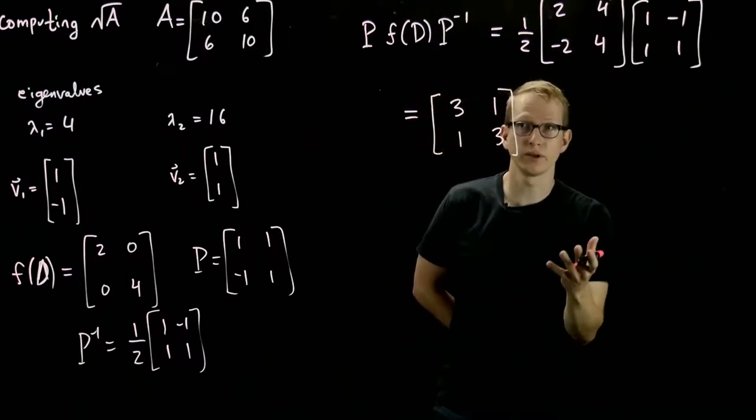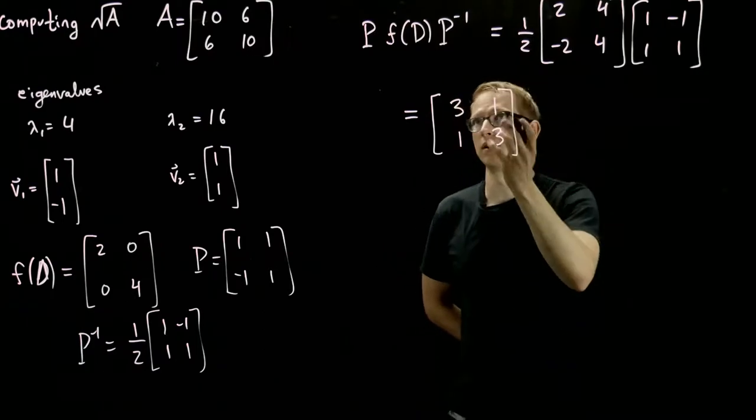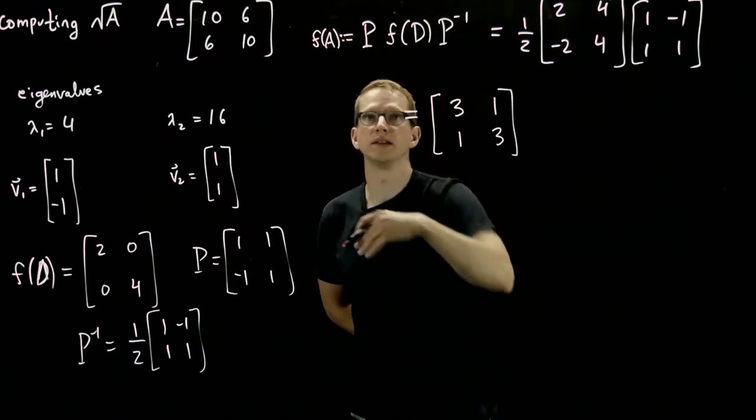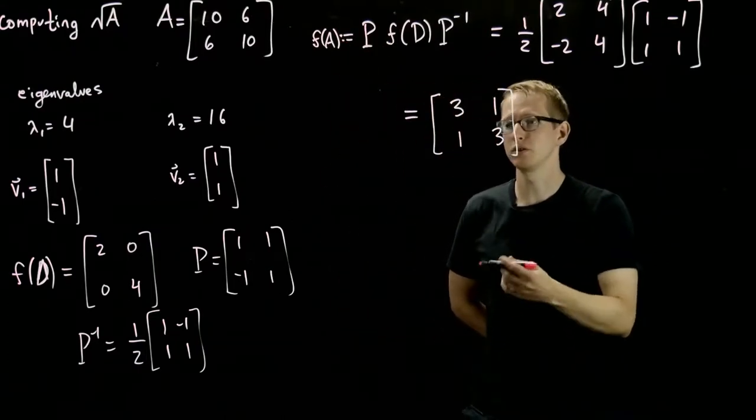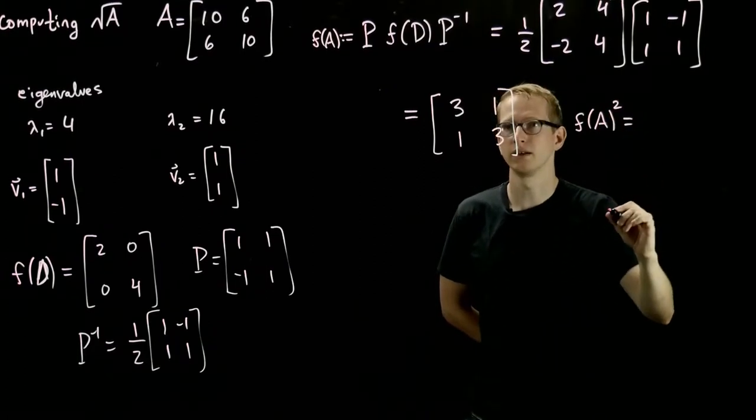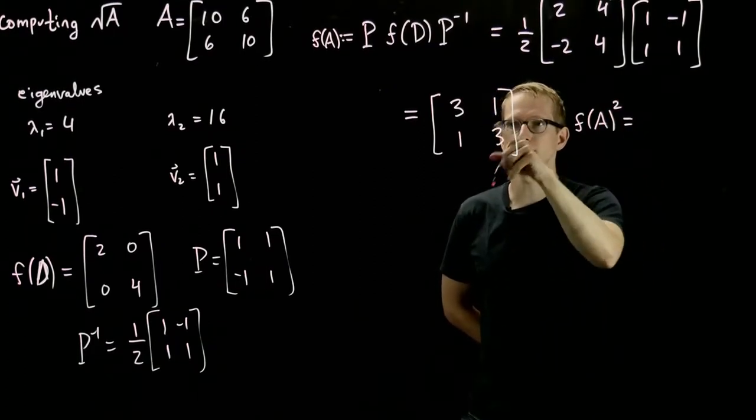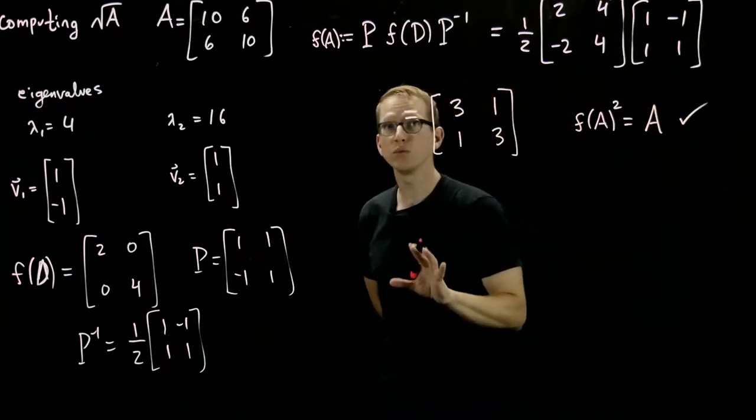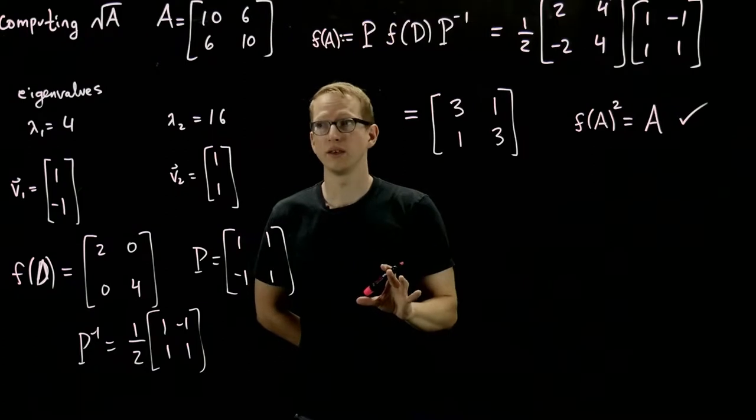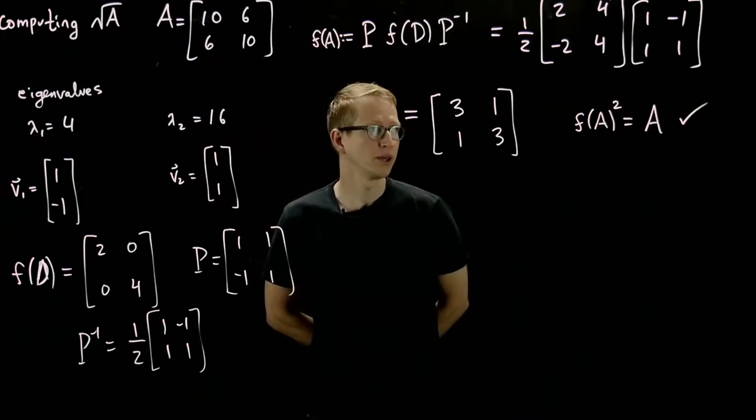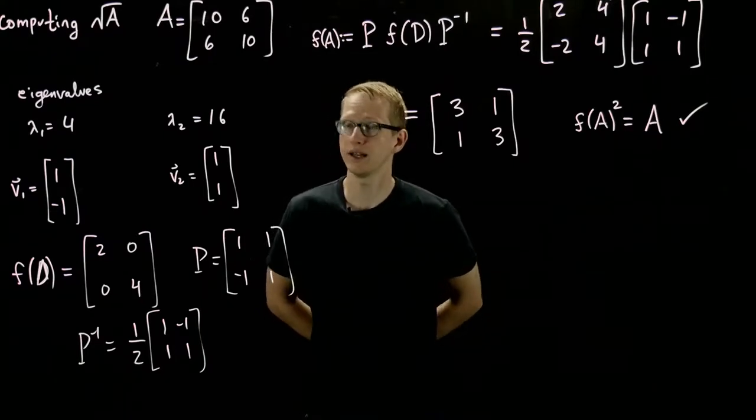So let's check that if we square this matrix, so let's just call this f of A. This is the definition that we gave of f of A. So what happens when we square this matrix? f of A squared, we get exactly 10, 6, 6, 10. So we do get our original matrix back. So this is one way of computing the square root of a matrix, or at least if it has positive eigenvalues, by computing the corresponding eigenvectors and eigenvalues.